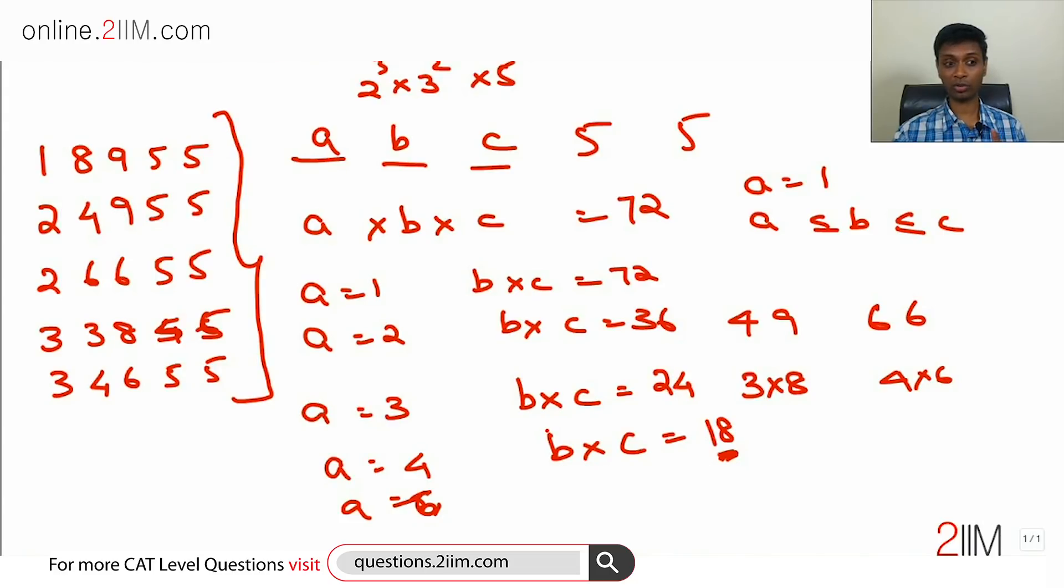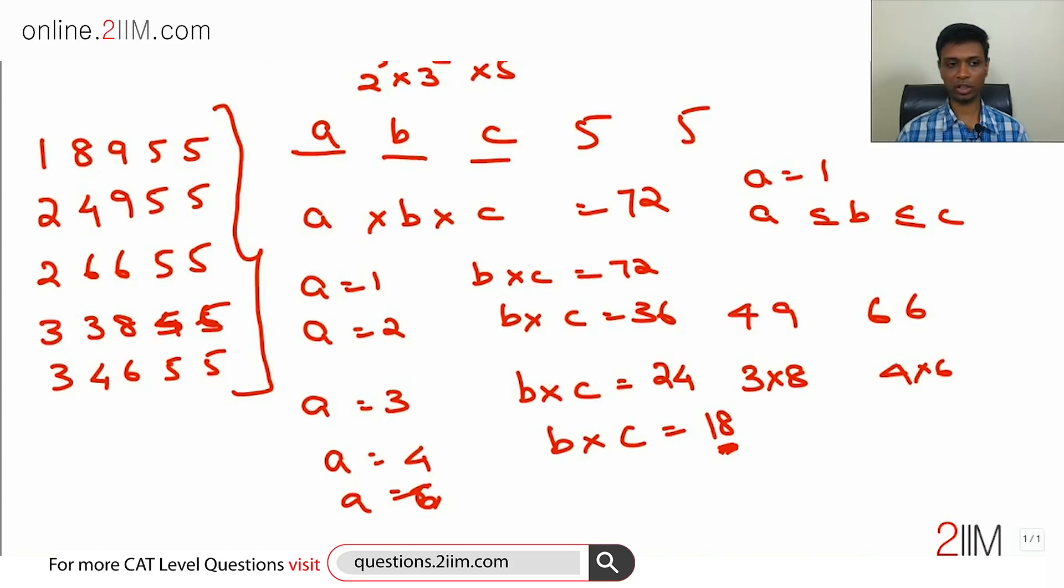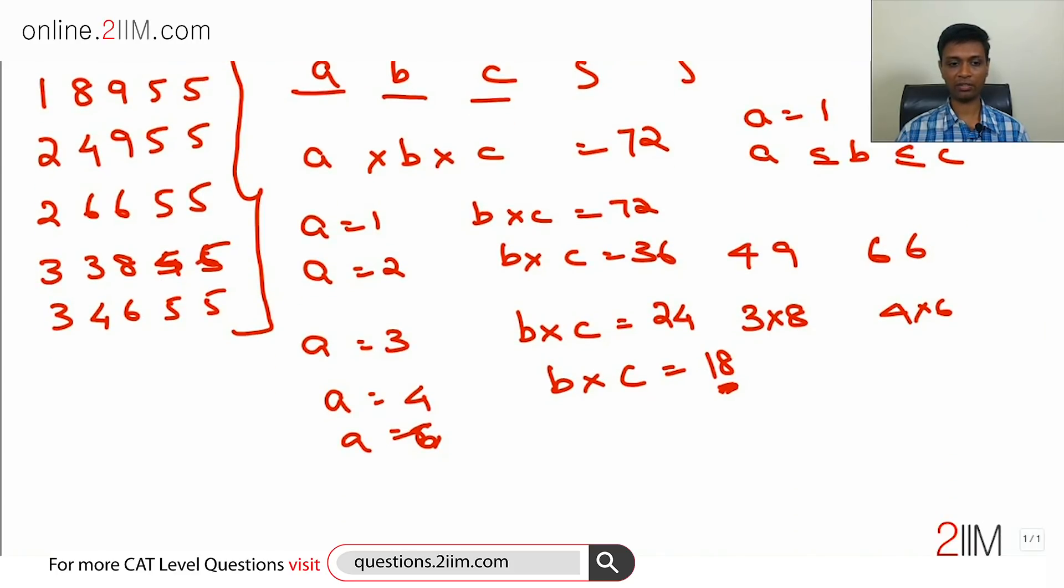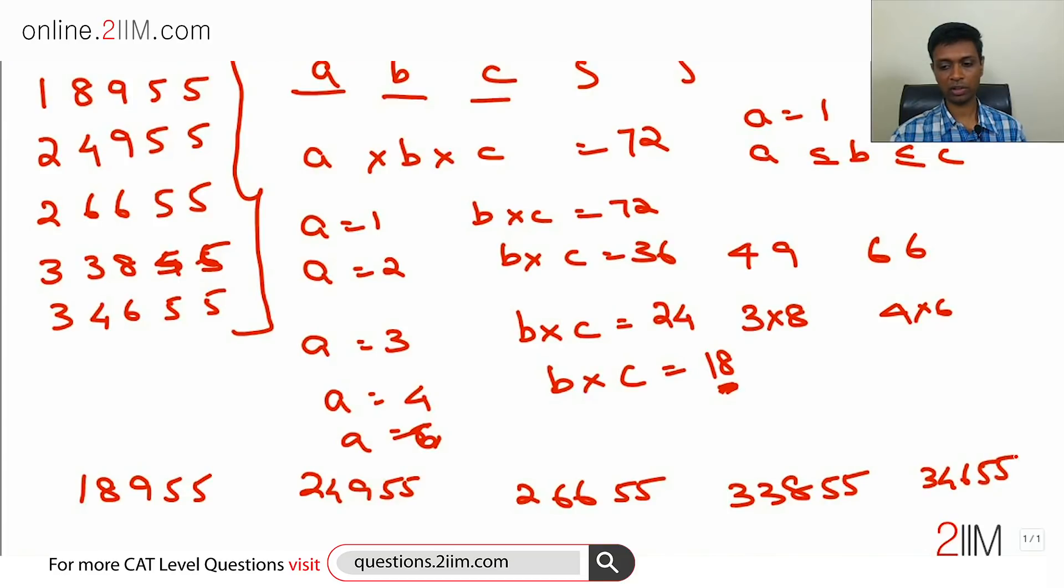Remember, we still haven't come to the number of numbers. I'm just going to write that down. We have 1, 8, 9, 5, 5 or 2, 4, 9, 5, 5 or 2, 6, 6, 5, 5 or 3, 3, 8, 5, 5 or 3, 4, 6, 5, 5.